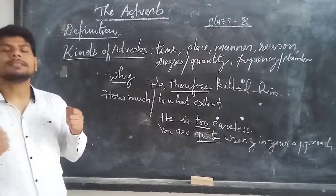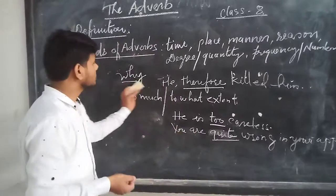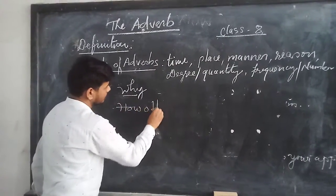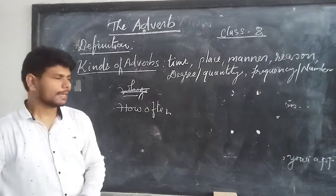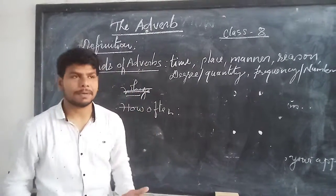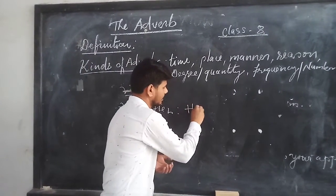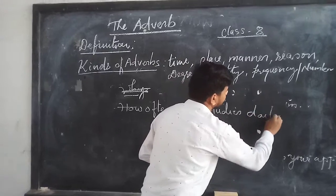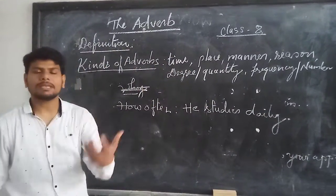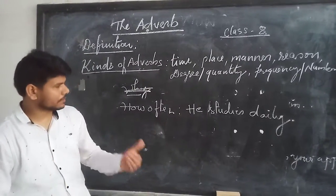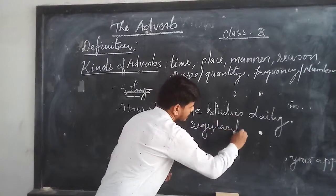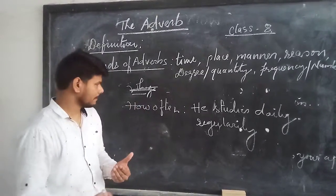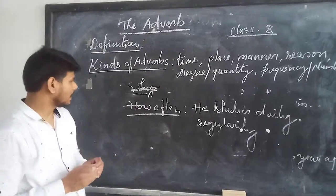The last one we will be talking about is adverb of frequency and number. Frequency asks the question in a very different way, that is 'how often'. For example, he studies daily. We can also say daily, regularly. When we talk about this, the question asked is 'how often'.